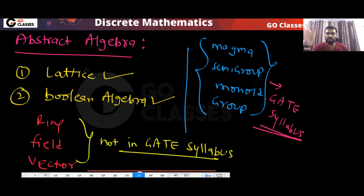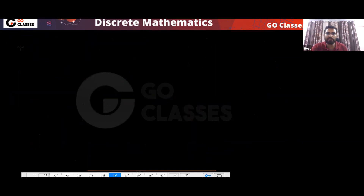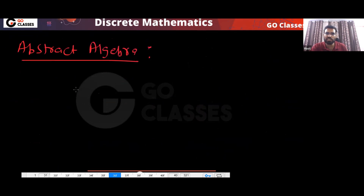Abstract algebra is very useful — in physics, chemistry, maths, cryptography, and every area you will find abstract algebra. But in the GATE syllabus, we only have these structures. All of them are structures because group theory is all about structures. Abstract algebra is the study of abstract structures — we will take some structures and study them.